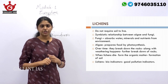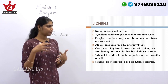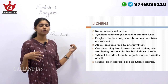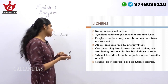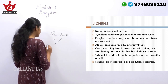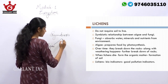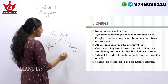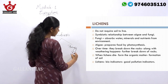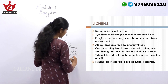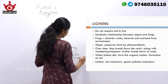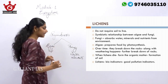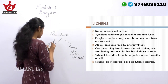Lichens share a symbiotic relationship between fungi and algae — symbiosis is a way of survival where organisms live for mutual benefit. The algae and fungi together form lichens: the fungi absorb the water and the nutrients required, while the algae carry out photosynthesis and prepare food.